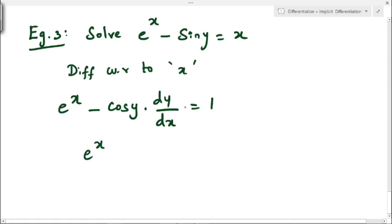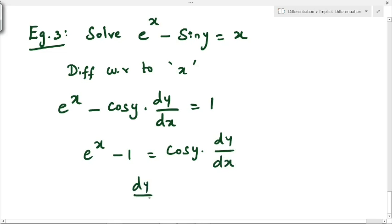Rearranging: e^x − 1 = cos(y)·(dy/dx). Taking 1 to the other side and isolating dy/dx, we get dy/dx = (e^x − 1) / cos(y).